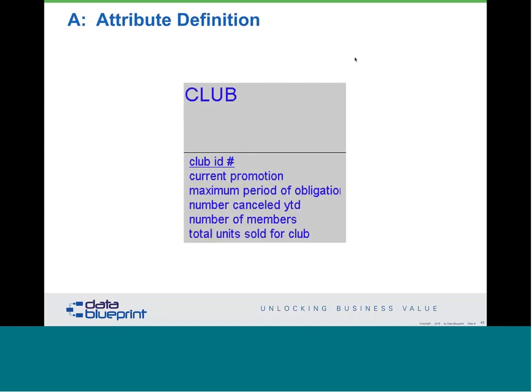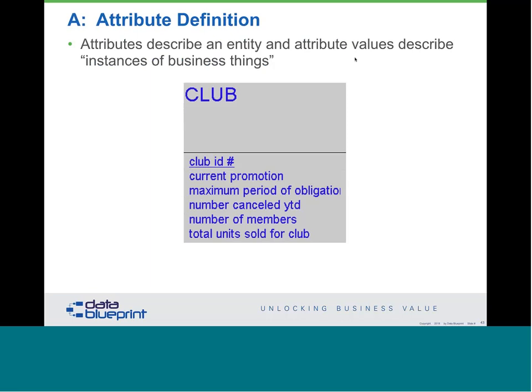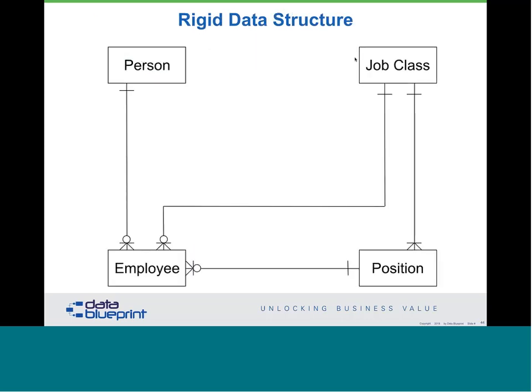An attribute definition is that attributes describe an entity and instances of those things. In our definition of club, we have some sort of ID for the club, a current promotion, a period of obligation, a number canceled year to date, number of members, and total units sold by the club. These don't mean anything outside of context, but for this entity they're important. So let's put it all together in a data structure.